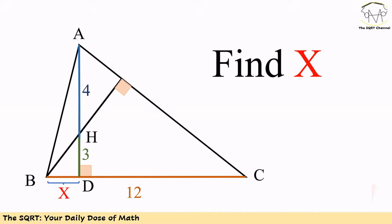Hello everyone, in this video we are going to solve a problem in geometry. Triangle ABC is given and we know AH equals 4 and HD equals 3. We also know BC equals 12. We want to find BD. Before moving to the solution, you have about 30 seconds to think about the problem.